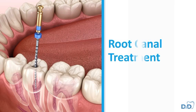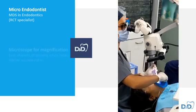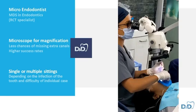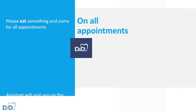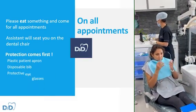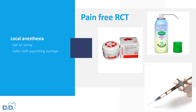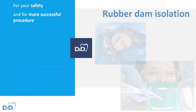Now we come to the next part, that is the step-by-step protocol followed in our clinic. All root canal treatments will be done by an endodontist who specializes in RCT, under a dental operating microscope for enhanced magnification, in single or multiple settings. At all appointments we request the patients to eat something and come. The assistant will seat you on the chair and place a plastic apron with a disposable bib and give you protective eyewear. To make the procedure pain free, local anesthesia will be administered. For your safety and for a more successful procedure, rubber dam isolation will be used at all treatments.